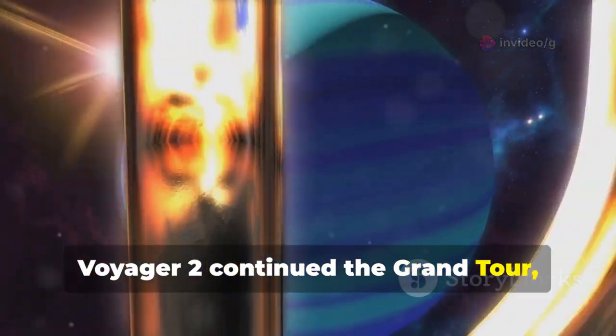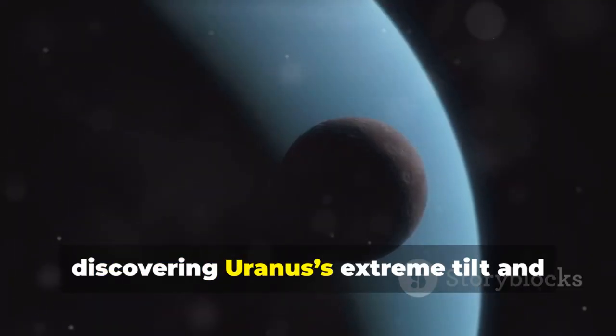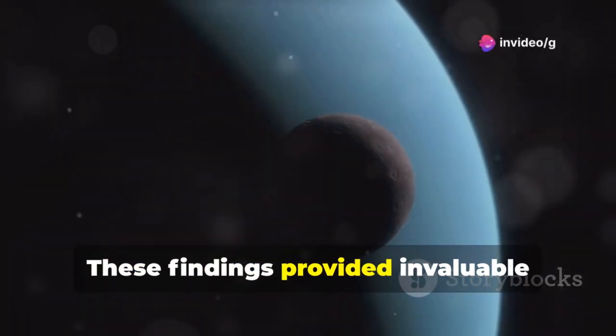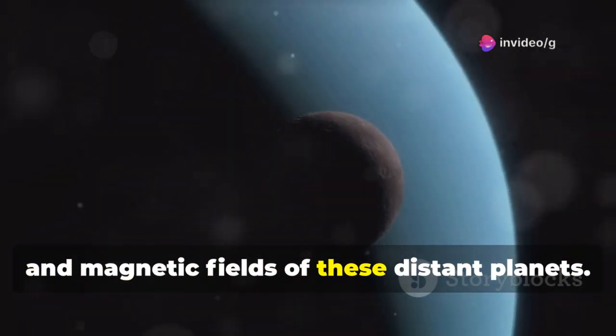Voyager 2 continued the Grand Tour, becoming the only probe to visit Uranus and Neptune, discovering Uranus's extreme tilt and Neptune's supersonic winds. These findings provided invaluable insights into the atmospheric conditions and magnetic fields of these distant planets.